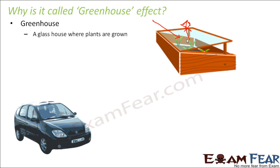A very similar phenomenon can be observed with a car. When you park your car in the sun with all windows closed, sunlight passes through the glass windows and heats up the seats and the entire interior. When the infrared radiation tries to come out, it is not allowed to escape, so the interior gets extremely heated up. That is why, if you park your car in the sun for a couple of hours, the interior is extremely hot when you return — the infrared radiation gets trapped within the car.